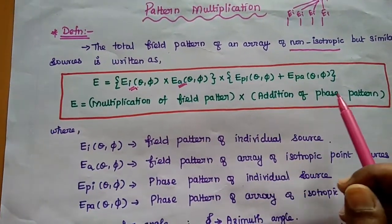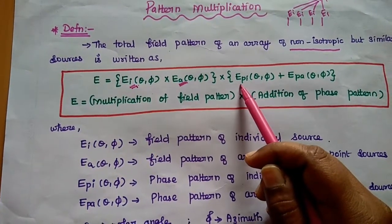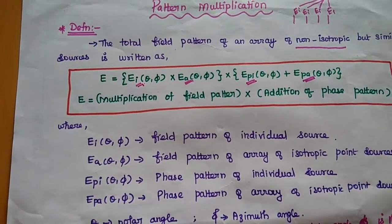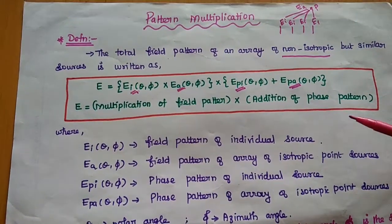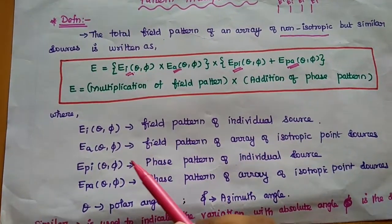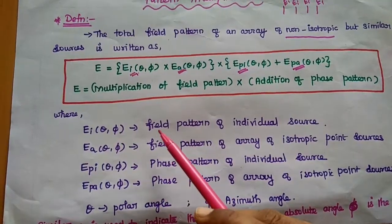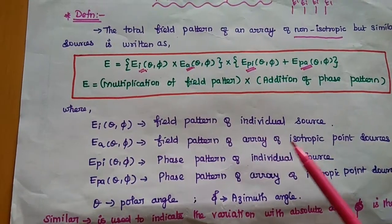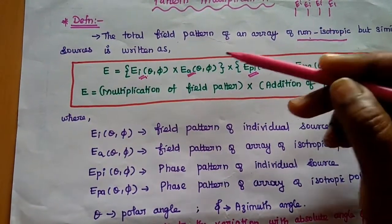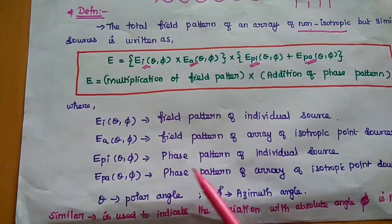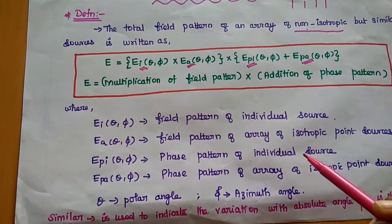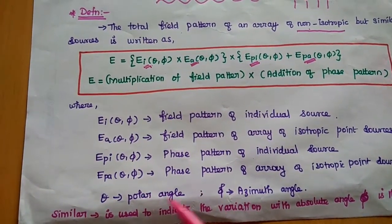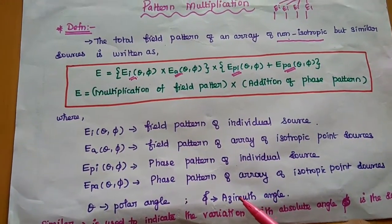The total electric field is obtained by multiplication of the field pattern of individual antenna elements and array elements, into the addition of phase patterns. If we multiply the fields, we add the phases — this is the definition of pattern multiplication. Each term EI(θ, φ) is the field pattern of the individual source, where EI represents an array of isotropic point sources, used to obtain the non-isotropic pattern with respect to isotropic point sources.